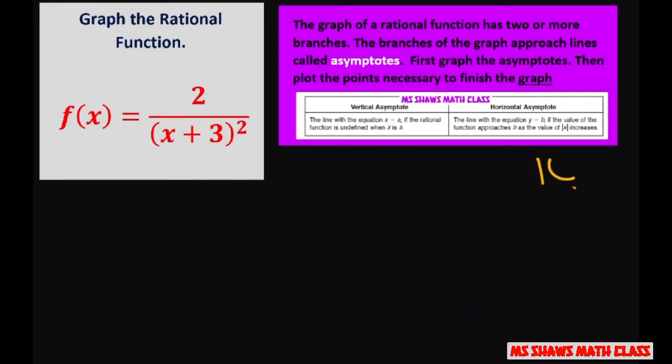The asymptotes provide the framework for the graph. Let's look for the vertical asymptote first. That one's usually the easiest. It's where your denominator cannot equal zero. So x would have to equal negative three. We don't want it to equal negative three because that would be undefined. Therefore, our vertical asymptote is x equals negative three. That's a line. Asymptotes are lines.